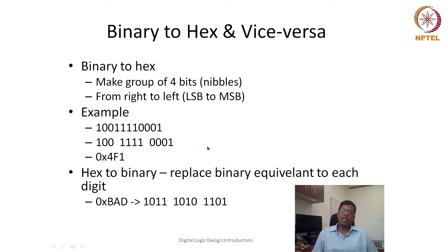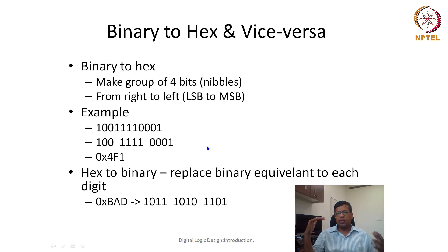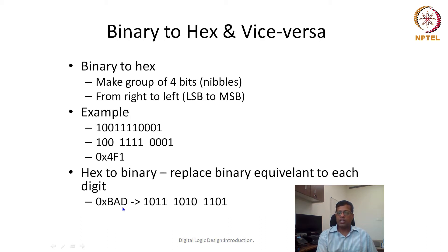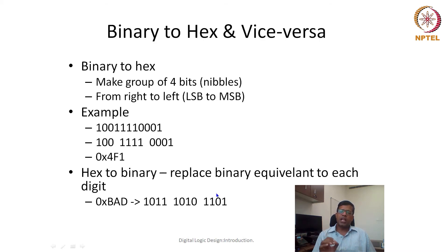From those symbols, if we know the binary we can have a direct translation. Similarly, if hex numbers are given and we need to convert to binary, we replace each hex digit with its equivalent 4-bit binary number using a mental lookup table. For example, for the hex number BAD: B means 11, so the binary is 1011; A means 10, so the binary is 1010; D means 13, so the binary is 1101. That is why hex is an equivalent representation of binary.